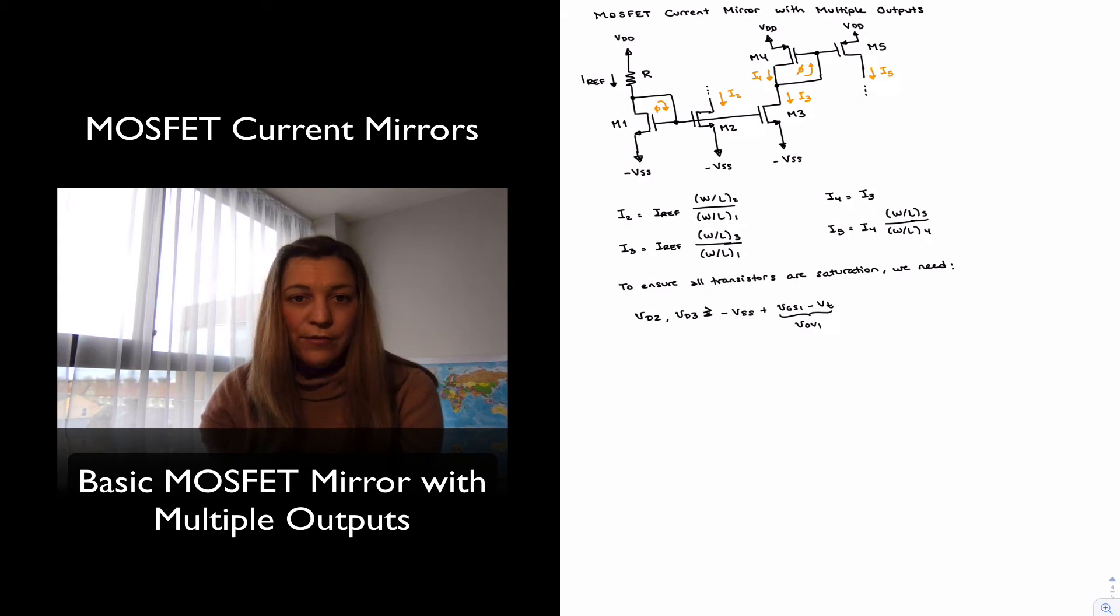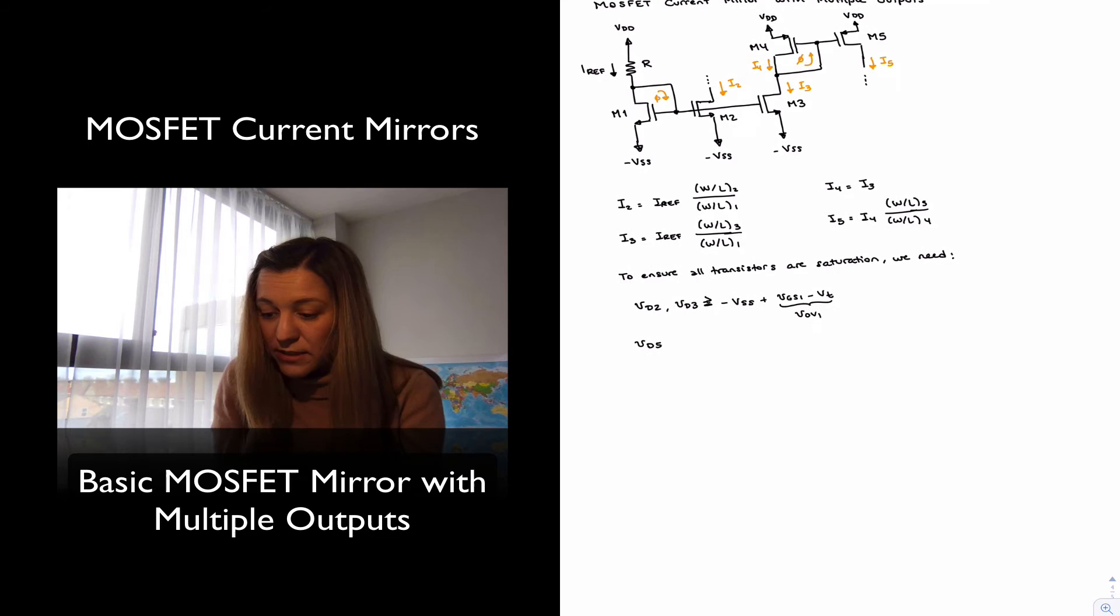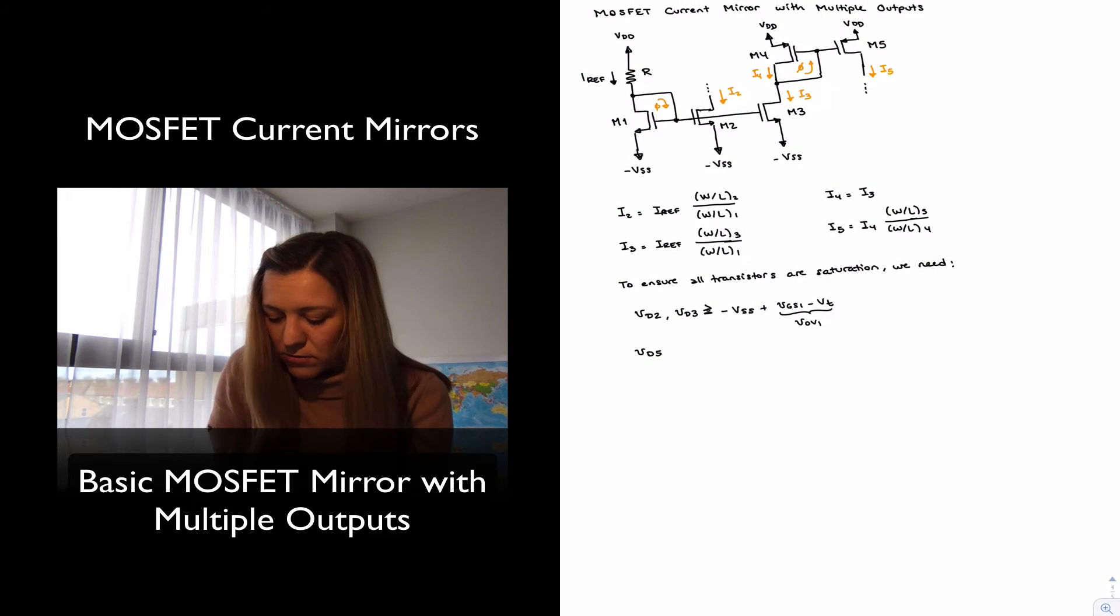In the case of M5, since it's a PMOS transistor, the equation is slightly different. We will need VD5 to be less than or equal to VDD minus the absolute value of the overdrive voltage of transistor 5.